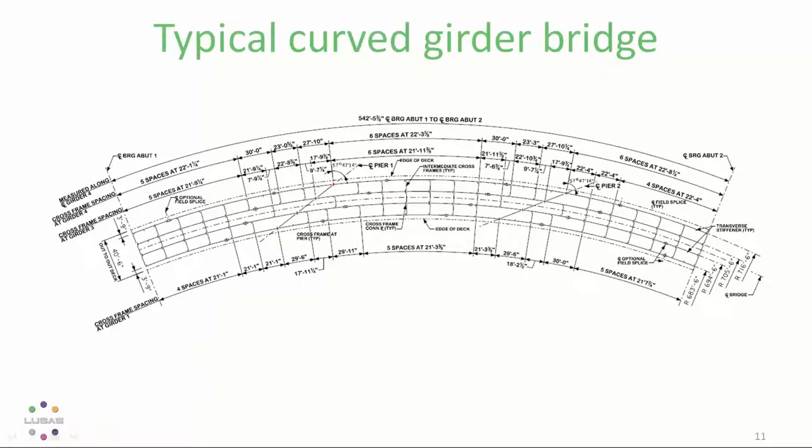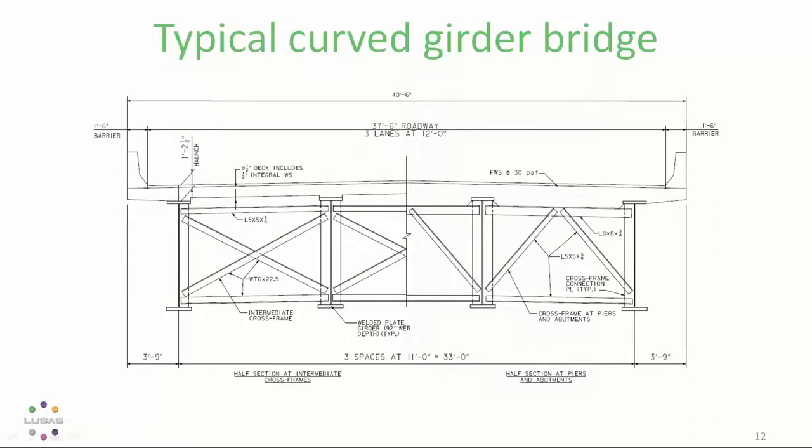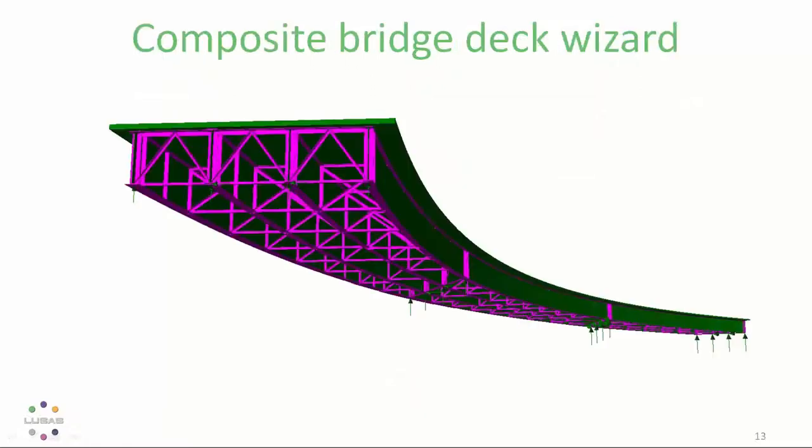So here's a plan view of a typical curved girder bridge. Three spans curved on plan with interior supports heavily skewed. In fact there's four girders of various bracing arrangements used across the spans, and fundamentally the engineer can choose to idealize that structure using a grillage model or using a 3D shell and beam element model like this. However if they want to do this kind of model that's typically quite a tricky job.